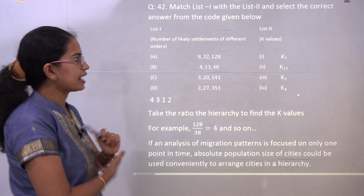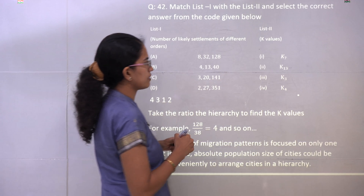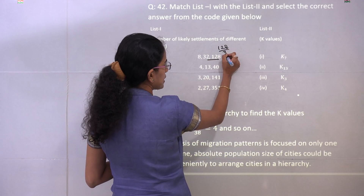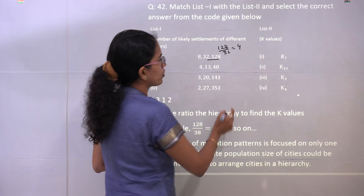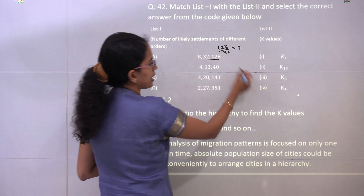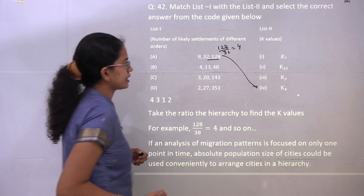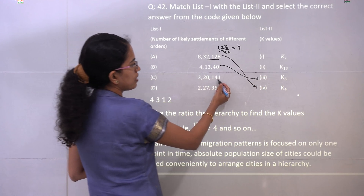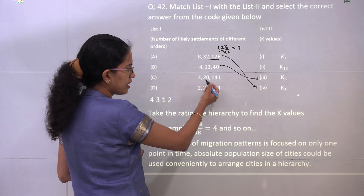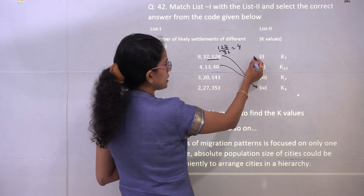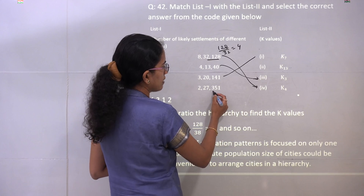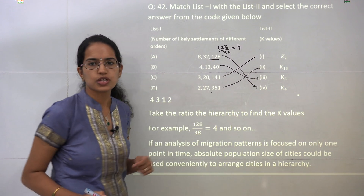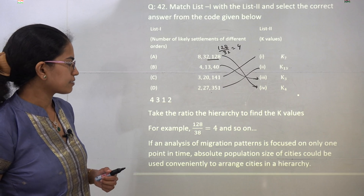Under settlement hierarchy, the only way to find the K values is to divide within the hierarchy. So 128 divided by 32 yields K = 4. For the next, the correct match is K = 3 (40 by 13). Then 141 divided by 20 gives K = 7, and 351 divided by 27 gives K = 13. Those are the correct matches.